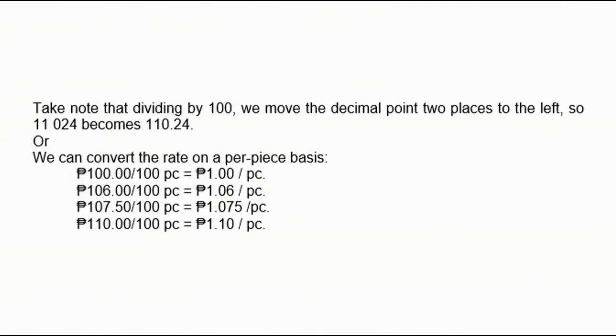Take note that dividing by 100, we move the decimal point two places to the left. So 11,024 becomes 110.24. Or we can convert the rate on a per piece basis: 100 divided by 100 is 1 peso per piece, 106 pesos divided by 100 is 1.06 per piece, 107.50 divided by 100 is 1.075 per piece, 110 pesos divided by 100 is 1.1 or 1 peso and 10 centavos per piece.